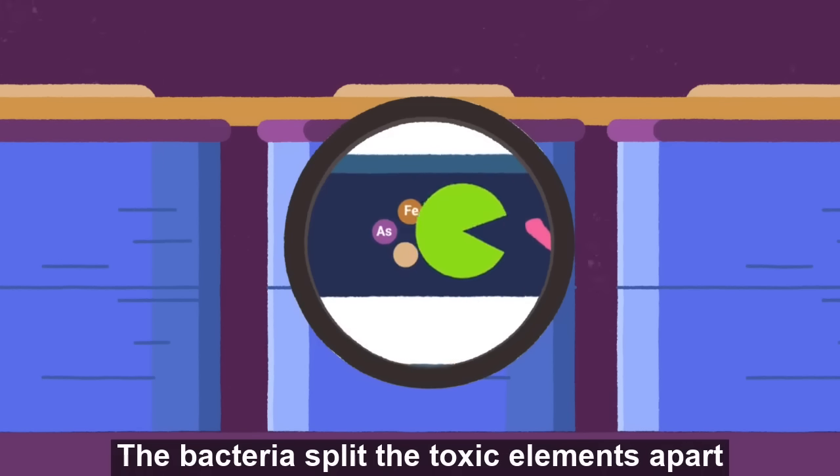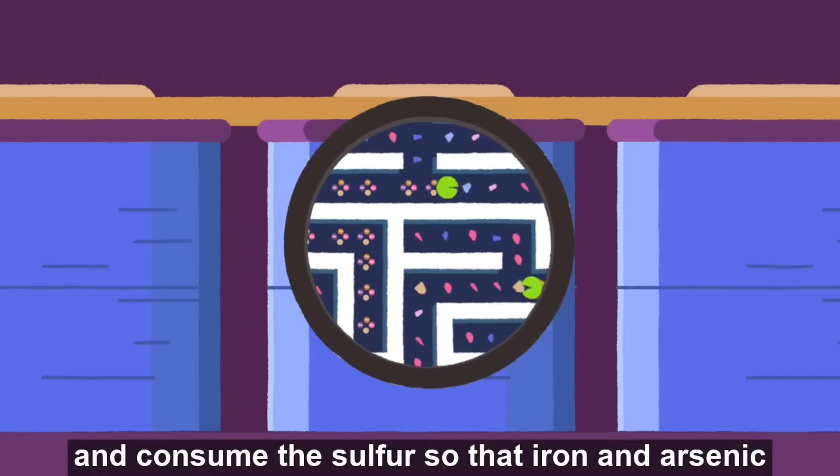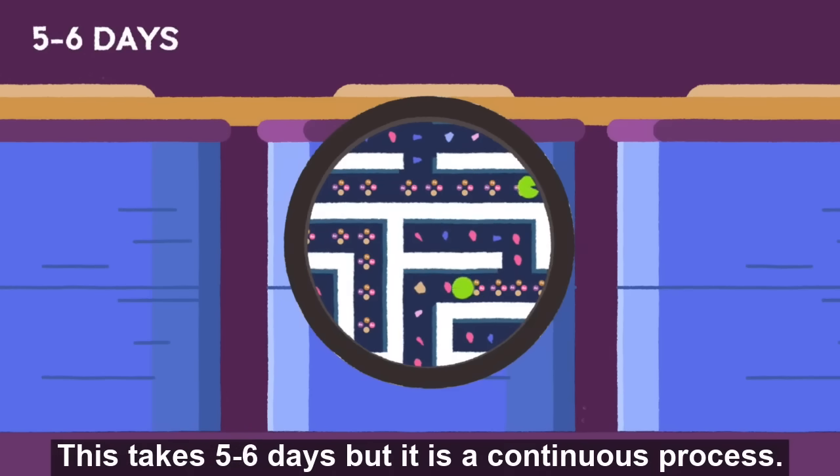The bacteria split the toxic elements apart and consume the sulfur so that the iron and arsenic become water soluble. This takes five to six days but it is a continuous process.